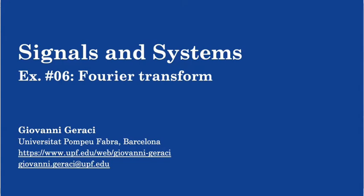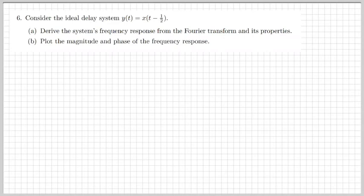On my channel I also upload theory and tutorial classes on signals and systems, so this is the right channel for you if you want to learn the fundamentals of signals and systems rather quickly through theory and examples. Let's get started. The first exercise for today is labeled as exercise number six. We should consider an ideal delay system where the output y(t) is given by x(t - 1/2), where x(t) is the input. We should derive the system's frequency response from the Fourier transform and its properties.